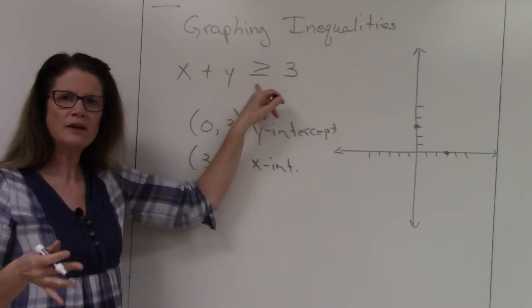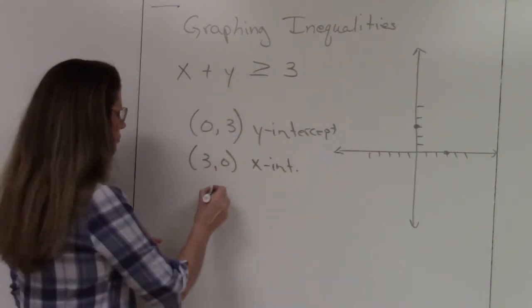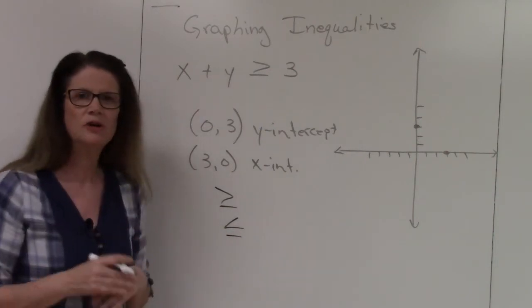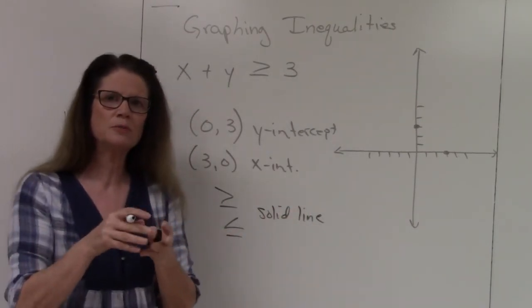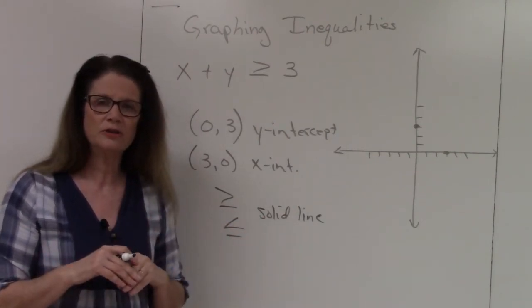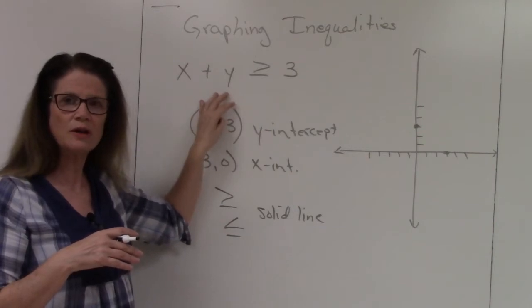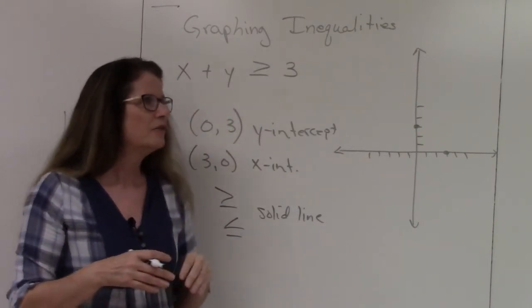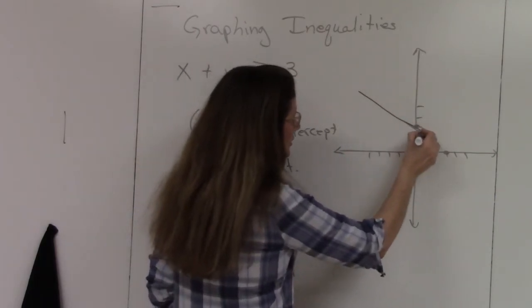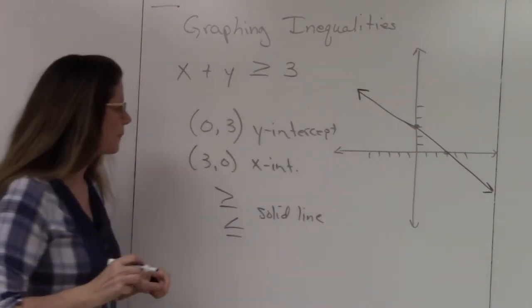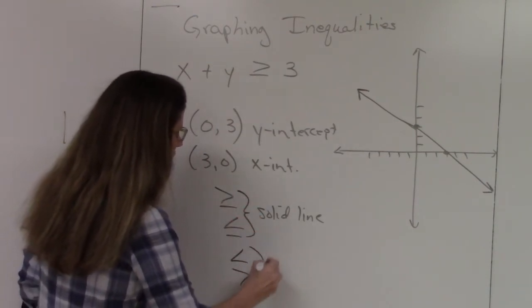The difference between an equal sign and an inequality is that the inequality tells you whether the line is included or not. When you have greater than or equal to, or less than or equal to, that indicates a solid line. Just like a solid point means the point is included, a solid line means the line is included — those are values that satisfy the inequality. So we draw a solid line connecting the two intercepts.